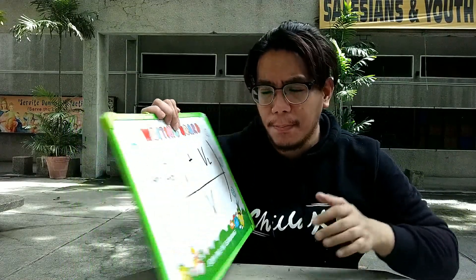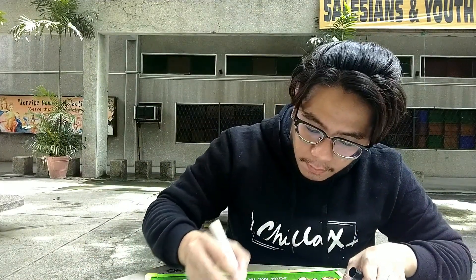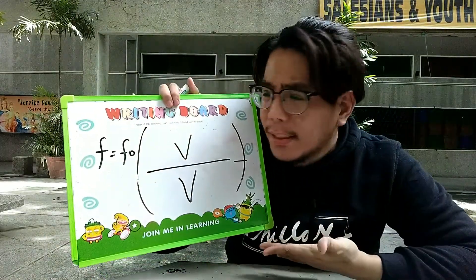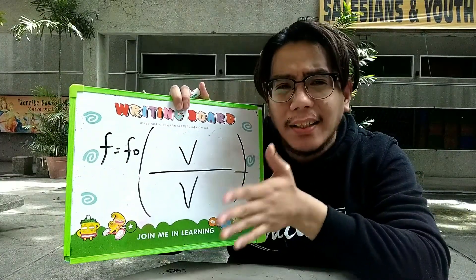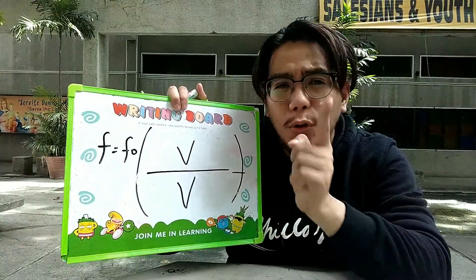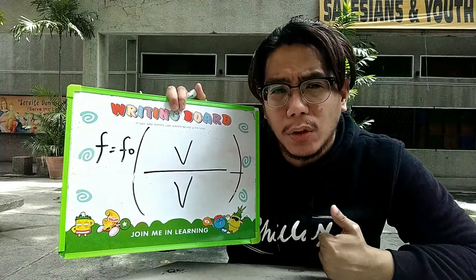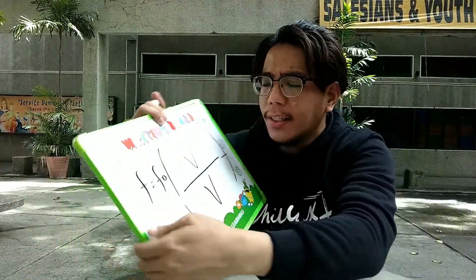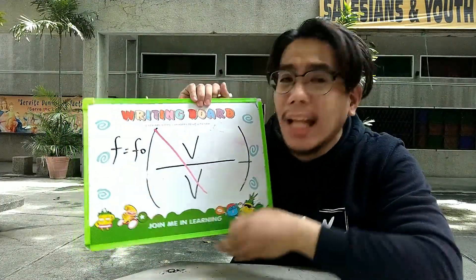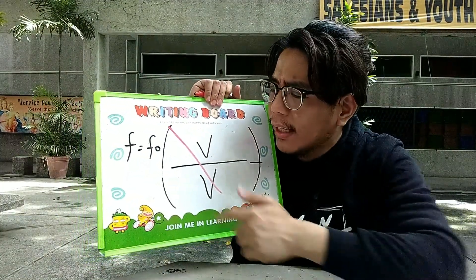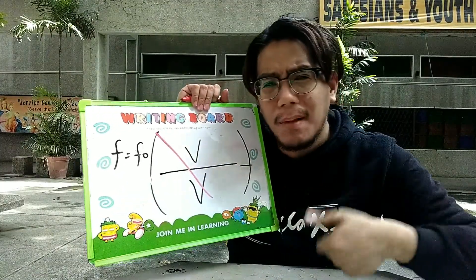Paano pag ganito naman? Pag ganito naman, ibig sabihin lang naman ito na yung listener is at rest at the same time yung source is at rest din. Paano ito pag iso-solve natin? Ang gagawin mo lang dito ay ika-cancel out mo lang sila. At ang magiging formula mo lang talaga is ito lang talaga.